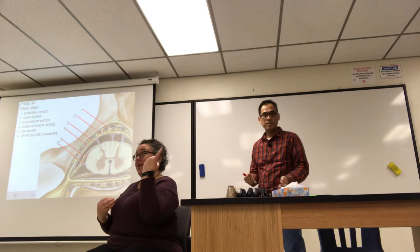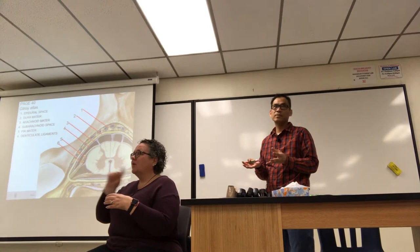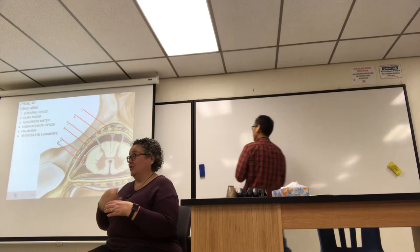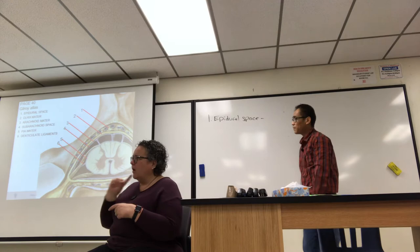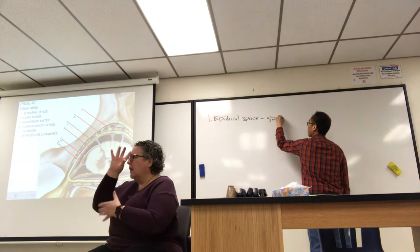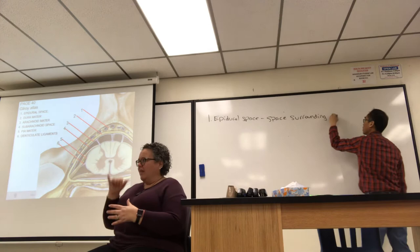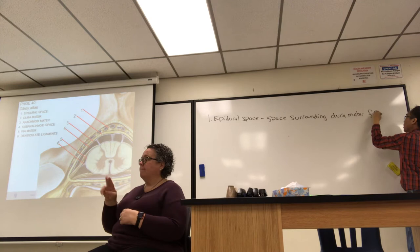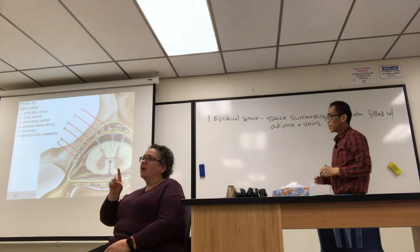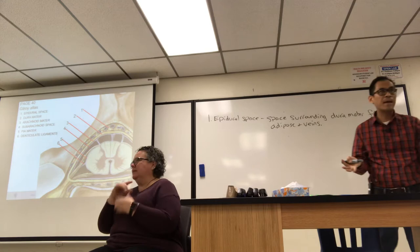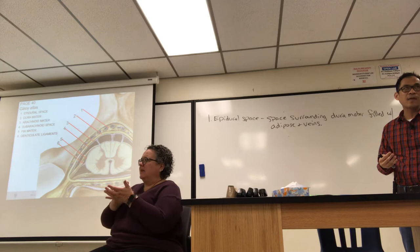Number one on the figure is the epidural space — the space surrounding the dura. 'Epi' means surrounding or overlying. As seen in the picture, this space is filled with adipose tissue and blood vessels (veins). The term 'epidural' refers to this space where a catheter is inserted to administer anesthesia.